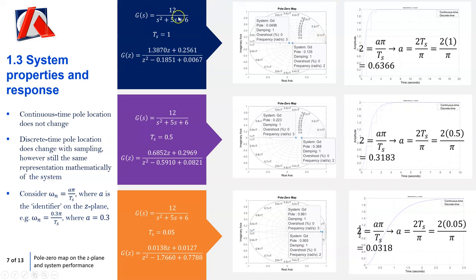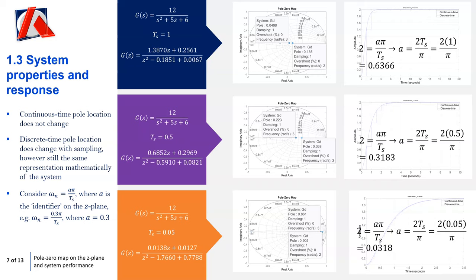For example, we have this continuous transfer function discretized with sampling interval 1, another version discretized with Ts = 0.5, and another with Ts = 0.05. The coefficients of the transfer function obviously change in each case, but if you were to convert from discrete back to continuous — using MATLAB's d2c command — you would find that the mathematical representation is identical.